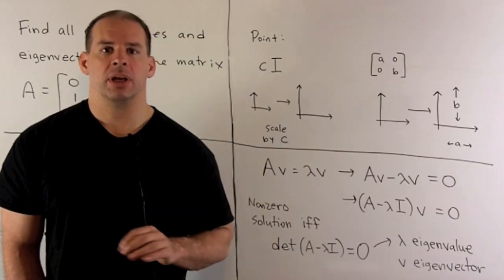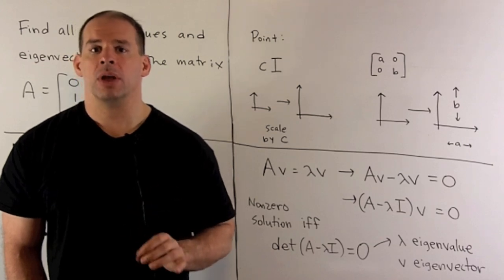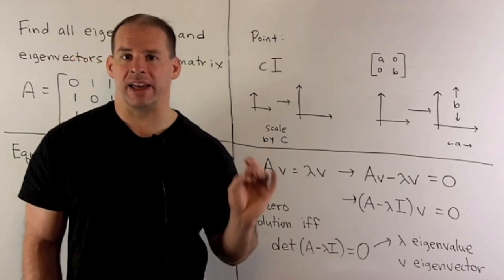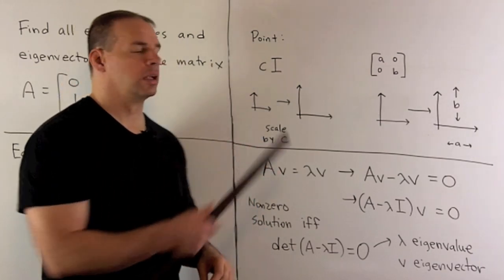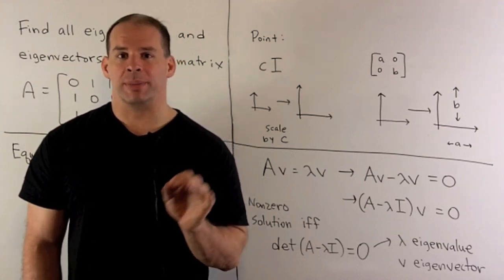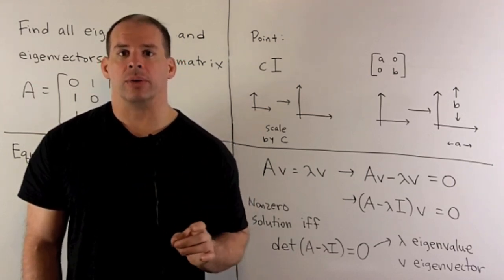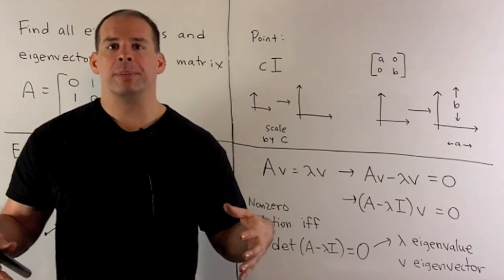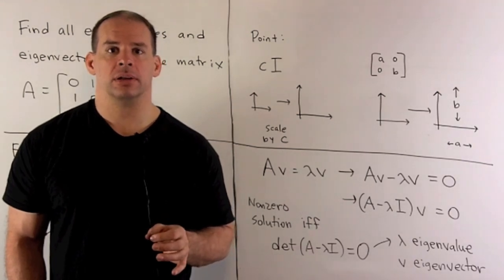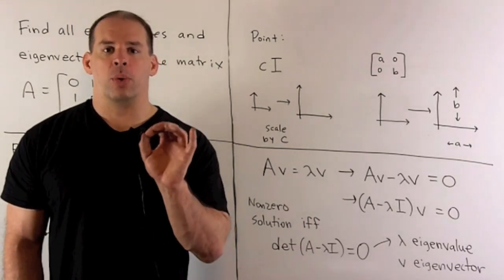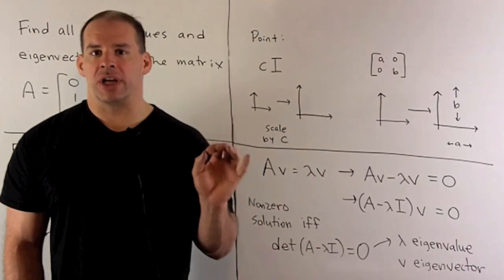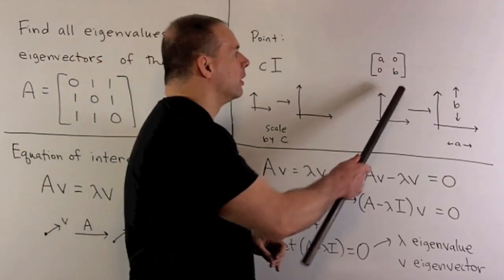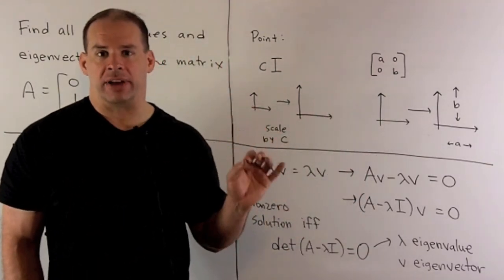What about the big picture? The simplest linear transformation that we can work with would be one where, when I choose the right basis, the associated matrix is a scalar multiple of the identity matrix. Now, that matrix is going to be diagonal, same scalar down the diagonal. The scalar's positive. The effect on the space is just going to be to rescale the same in every direction. Now, to go from there, we could ask about linear transformations where, if we find the right basis, the associated matrix is diagonal, but not necessarily with the same scalar down the diagonal.